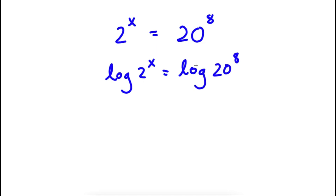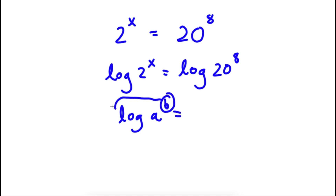Now an important property of logarithms is that if I have something in the form log a to the power of b, I can actually move this exponent b to the front of the logarithm. So this would be equal to b times log a.